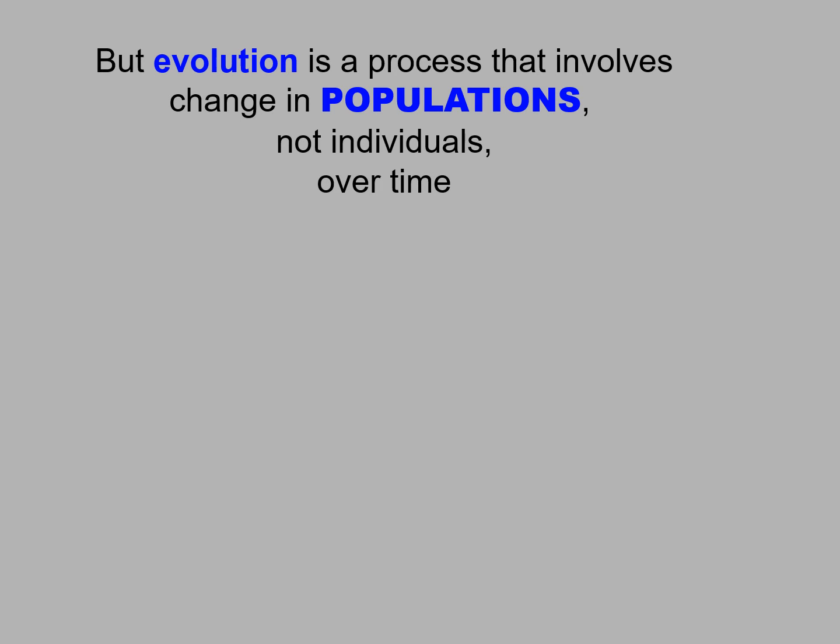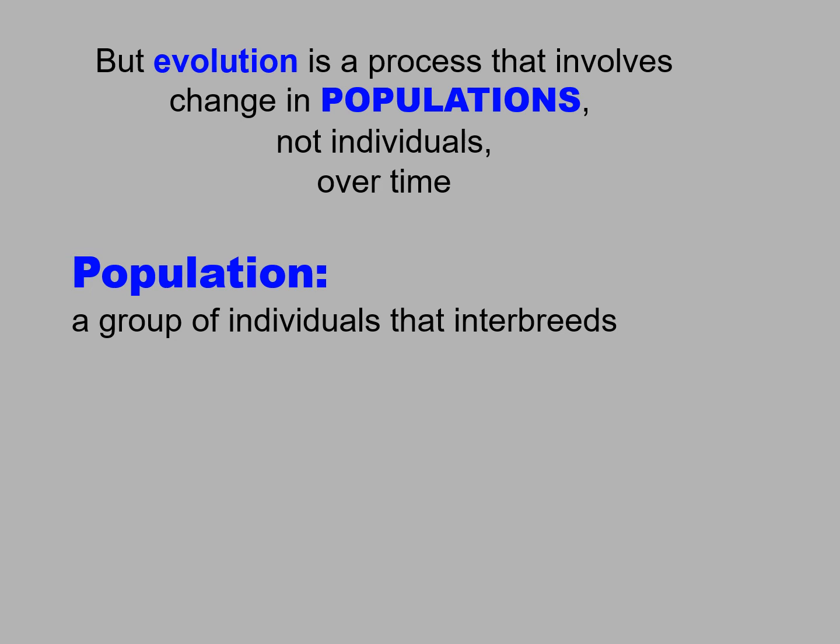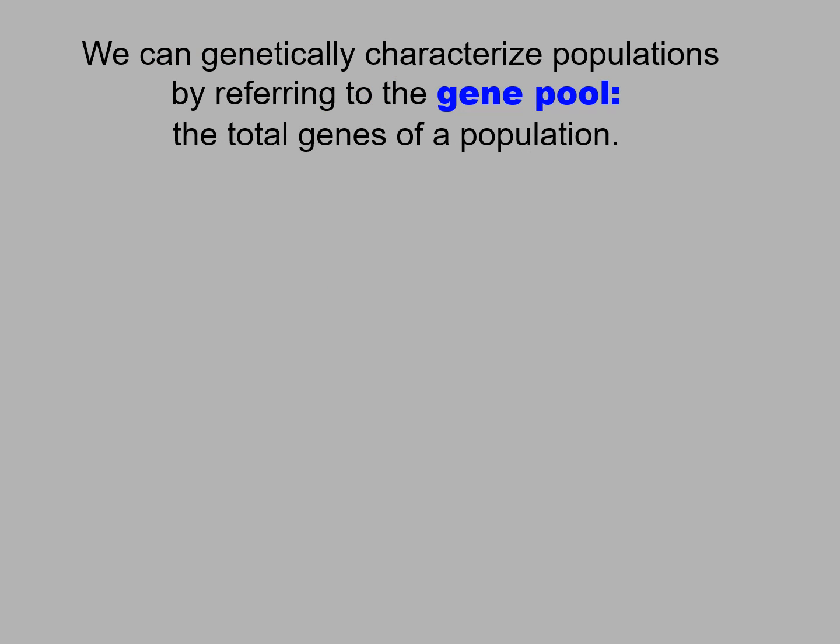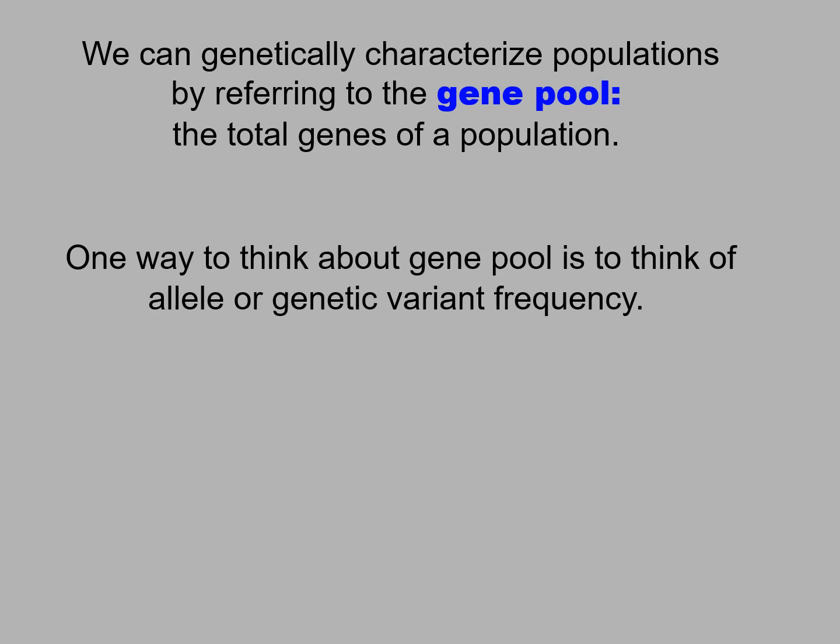But evolution is a process that involves change in populations, not individuals, over time. What is a population? It's a group of individuals that interbreeds. We can genetically characterize populations by referring to the gene pool — the total genes of a population. One way to think about gene pool is to think of allele frequency or genetic variant frequency.